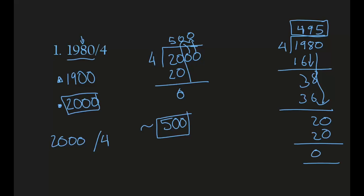We know our answer is approximately 500. Now we're going to round 495 to the nearest hundreds to verify. The tens digit is 9, which is more than 5, so we round up to the next hundreds. After 400, add 100, that would be 500. So 495 rounds to 500, which confirms this is the right answer. Our answer is 495.